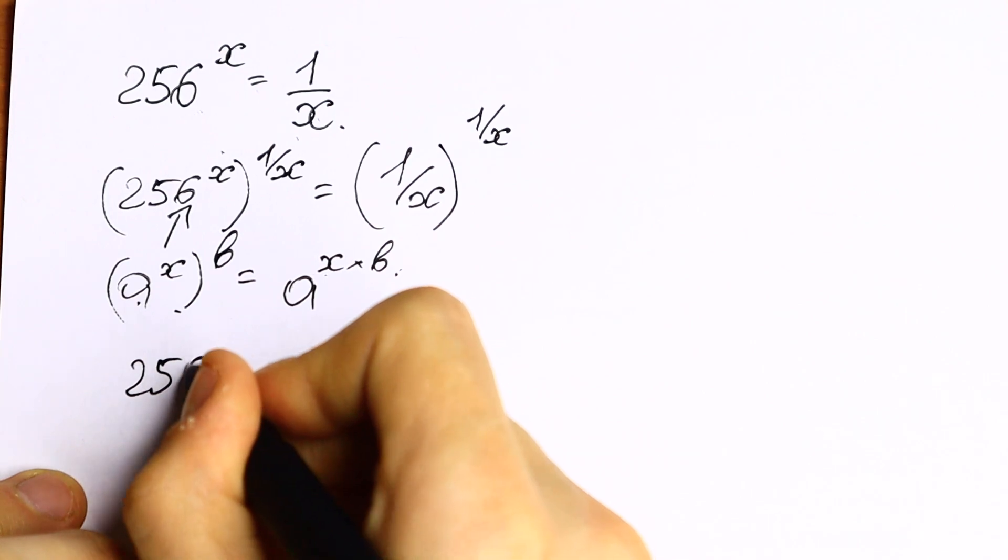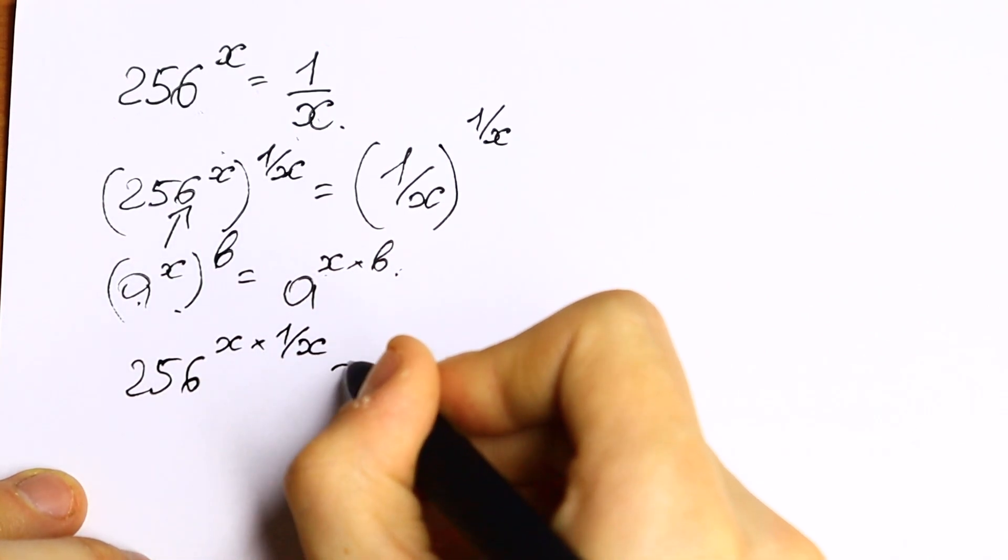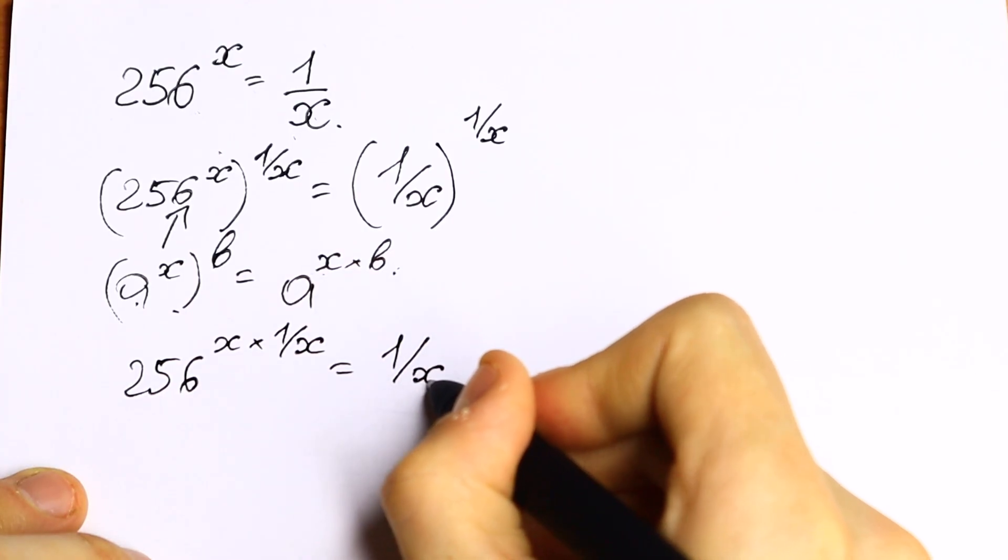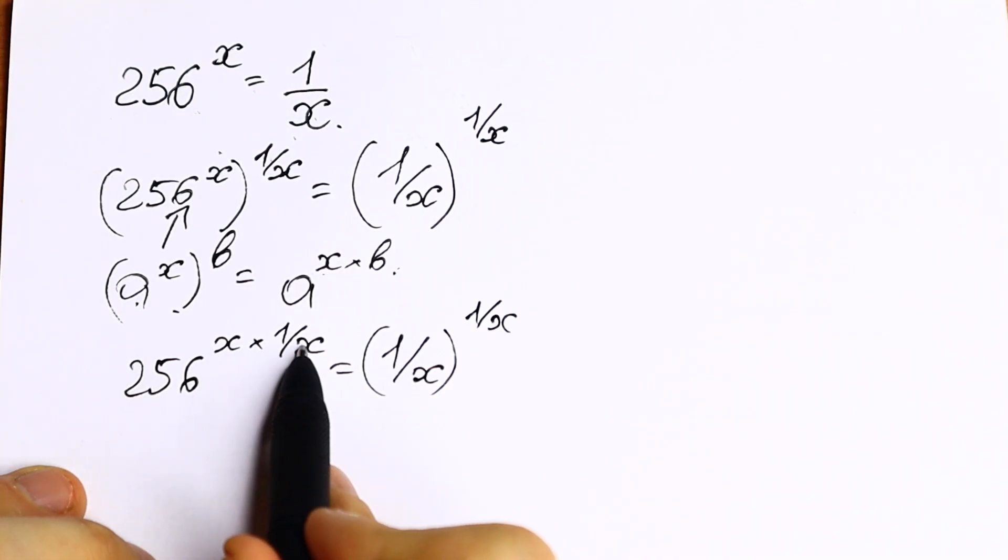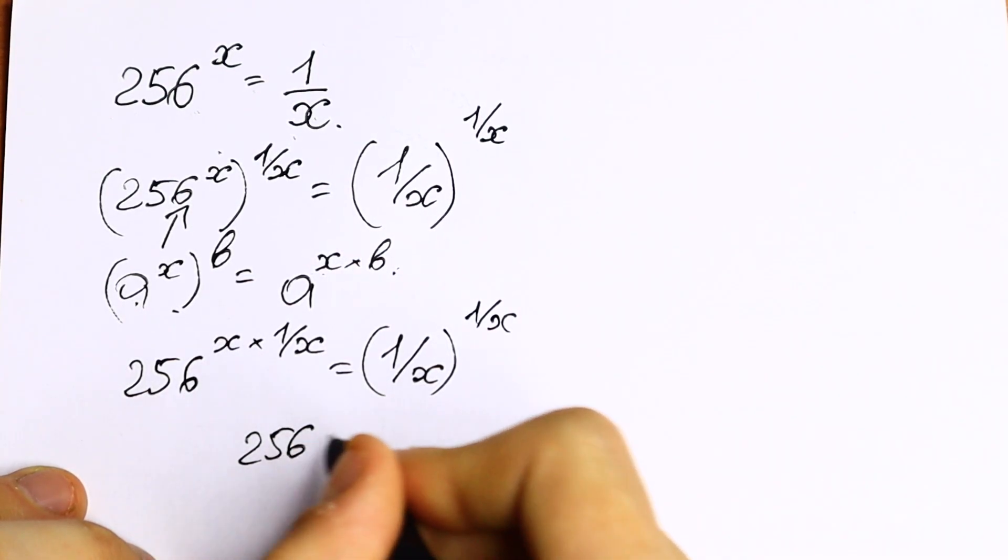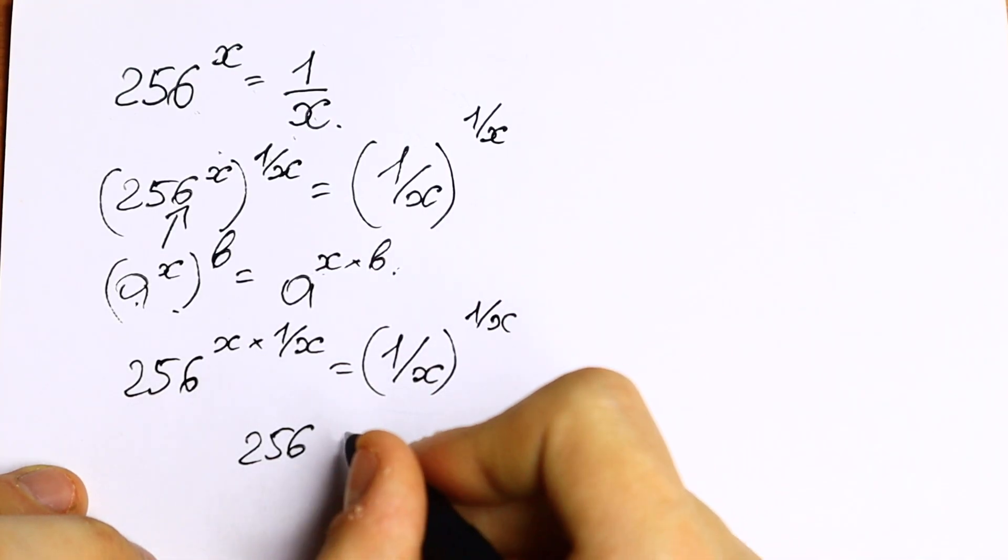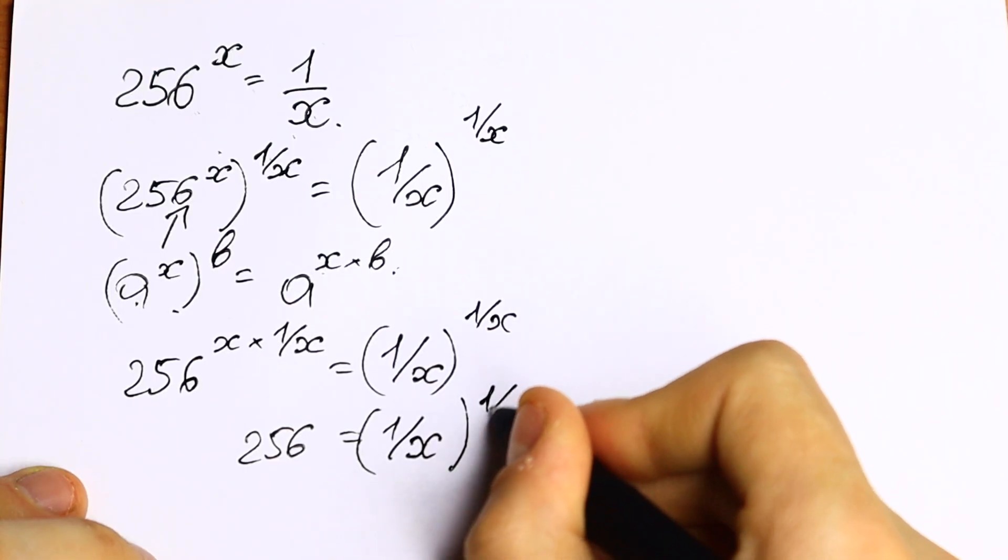We will have 256 to the power x times 1 over x equal to, this is the same on the right, 1 over x to the power 1 over x. And if we multiply x times 1 over x, we will have 1. So as a result, we will have 256 to the first power. 256 equal to 1 over x to the power 1 over x.